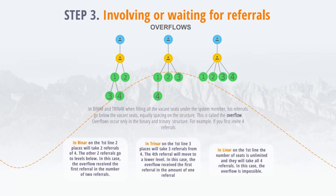Overflows occur only in binary and trinary structures. For example, if you invite four referrals: in Biner on the first line, two referrals out of four will take the two places, and the remaining two go to levels below — the overflow got the first referral two referrals. In Triner on the first line, three places will be taken by three referrals out of four; the fourth referral moves to the level below, so the overflow got the first referral one referral.